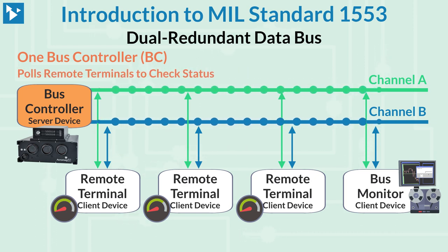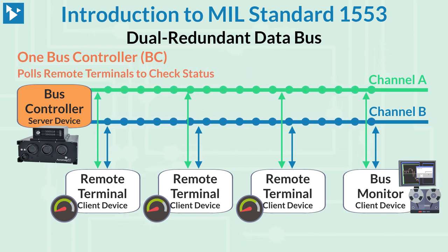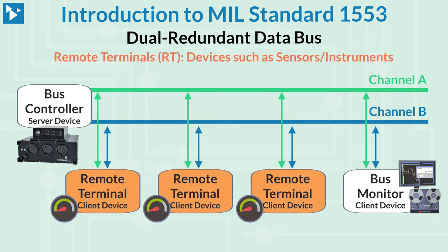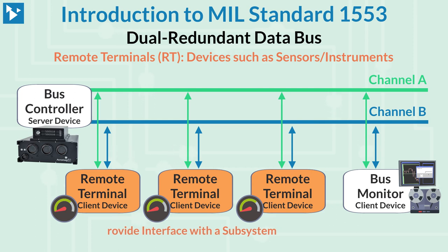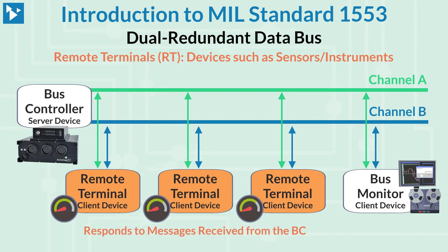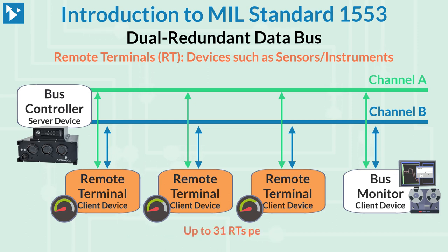The bus controller can also poll remote terminals to check status. The remote terminal provides the interface between a 1553 bus and a subsystem, and can also be used to bridge to another 1553 bus. A remote terminal responds to messages received from the bus controller. Each remote terminal has its own unique address, and there can be up to 31 remote terminals on a 1553 bus.